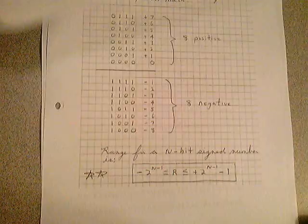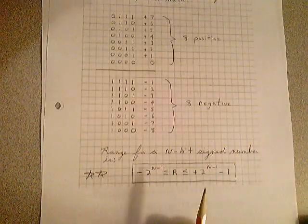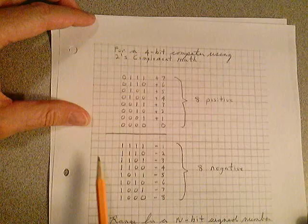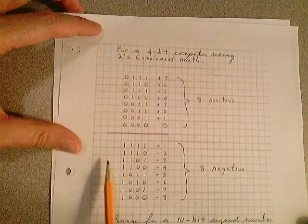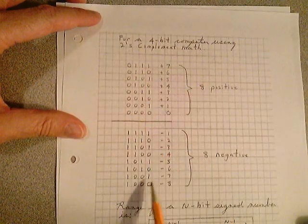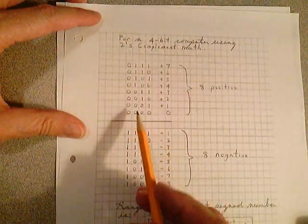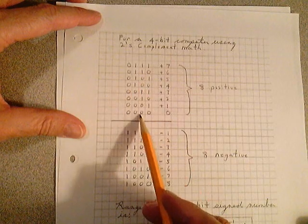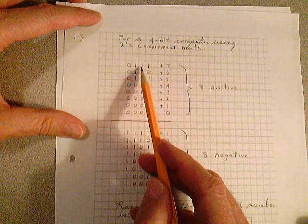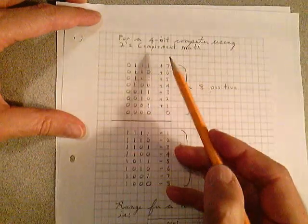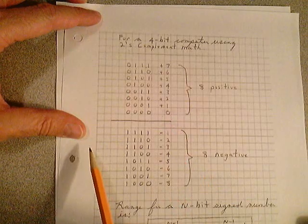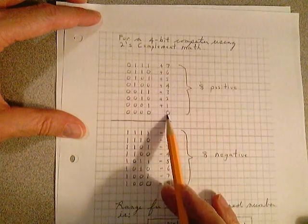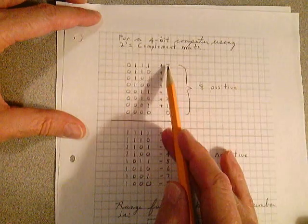On page 257, for a 4-bit computer using 2's complement math, I just showed you all the possibilities here from 0000 up to 0111. That's 8 different states — 8 positive numbers because 0 is the first number through a plus 7.